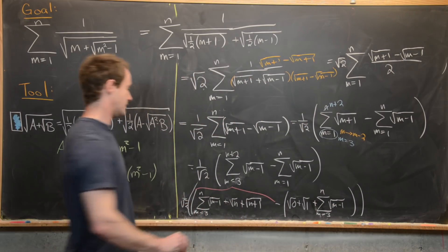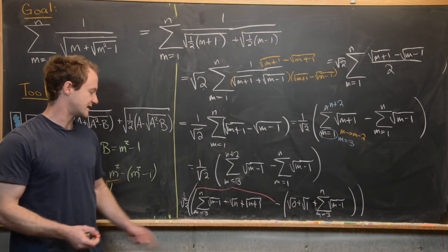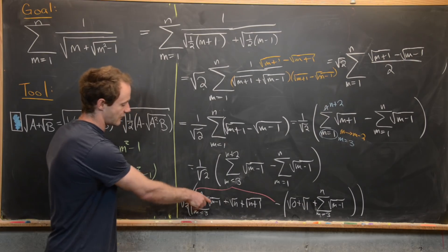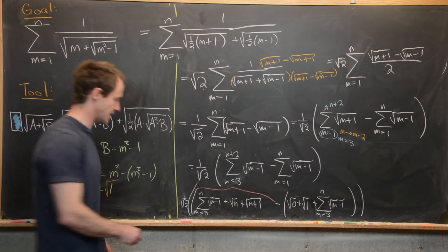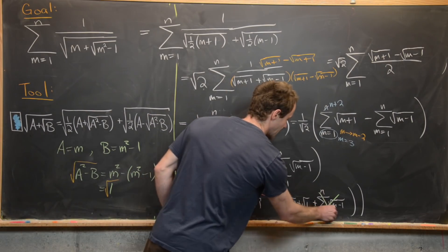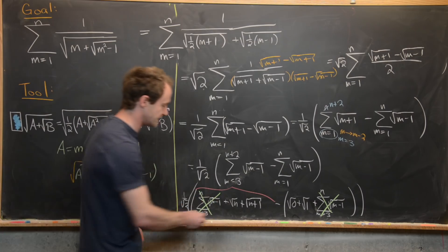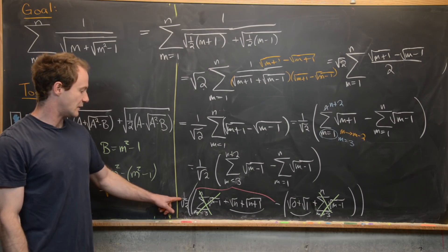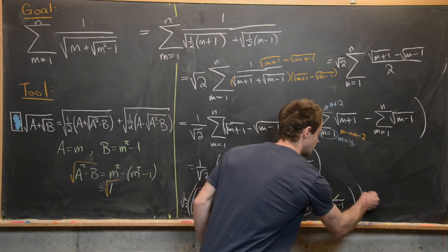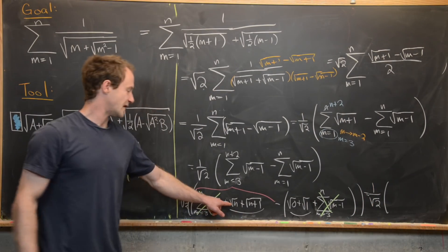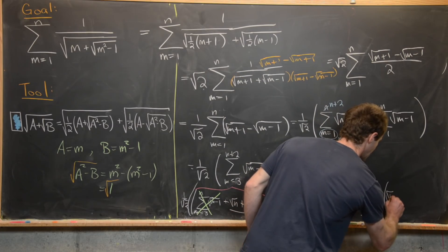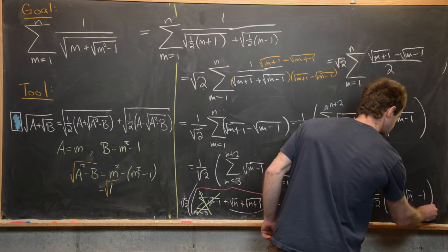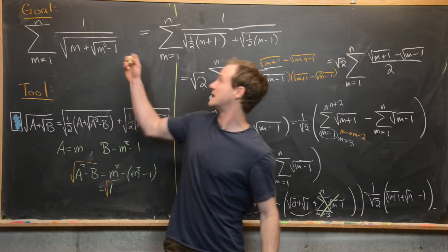Now we can start canceling: the sum from m equals 3 to n of radical m minus 1 appears in both, so they cancel each other. We're left with one over root 2 times root n plus root n plus 1, minus square root of 0 minus square root of 1. Since square root of 0 is 0 and square root of 1 is 1, our final answer is one over root 2 times the quantity root n plus 1 plus root n, minus 1.